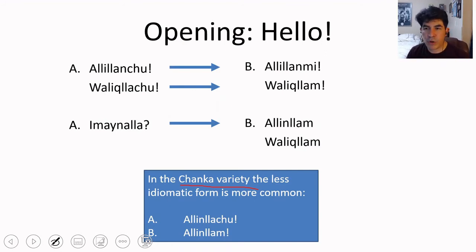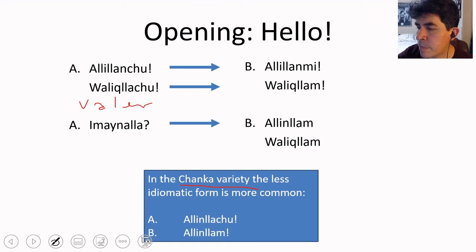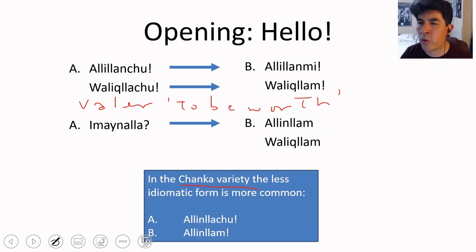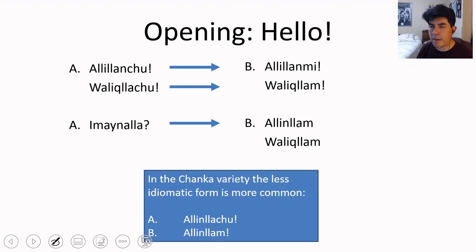Alilianchu means 'are you fine?' and comes from walex, which means 'fine' in Quechua. It's a word that comes from Spanish — from the form valer, meaning 'to be worth' — but it's already regularized in Quechua, particularly in Cusco and Bolivia. The second way of saying hello is the open one. By open, I mean you can add other types of information and are not bound to reply with something very fixed.